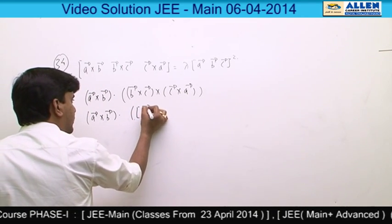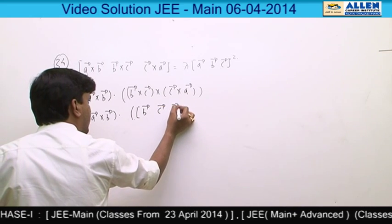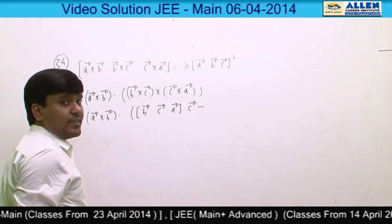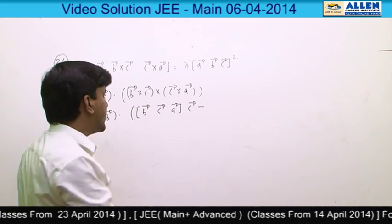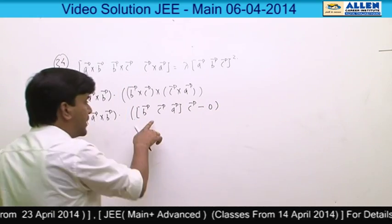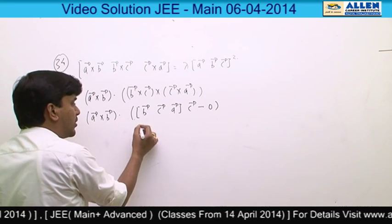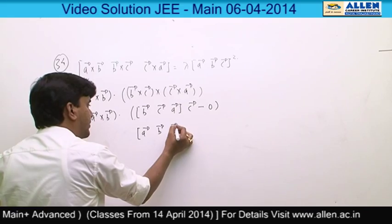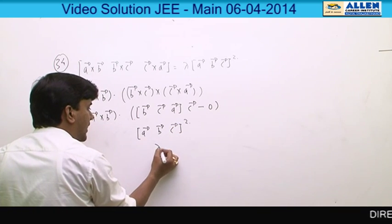That is BCA box, then A vector minus, then B cross C dot C. That is the box of BCC, which is going to be 0. Now BCA box we all know is ABC box, and this is A cross B dot C. So this is going to be ABC box square, and from here lambda is equal to 1. Hence the correct answer is option 1.